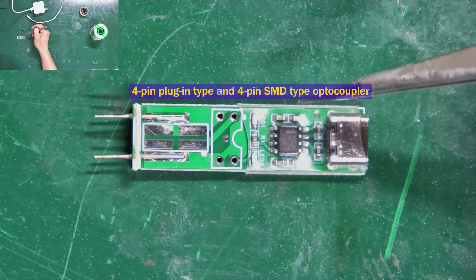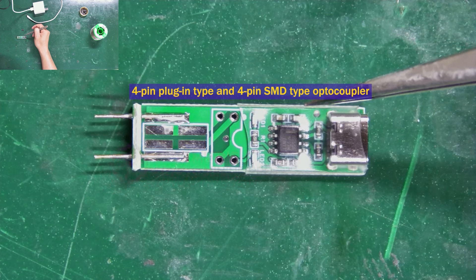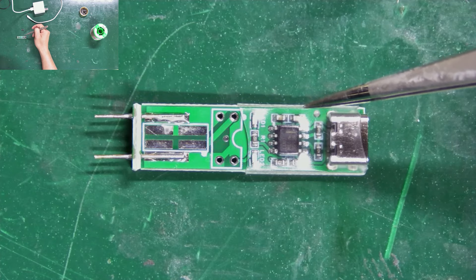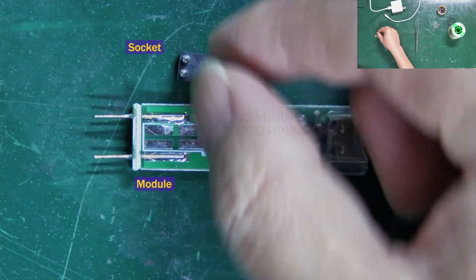It can detect the 4-pin plug-in type and 4-pin SMD type optocoupler of most minor PS use on the market, helping us troubleshoot quickly and improve repair efficiency. It consists of this module and this socket.